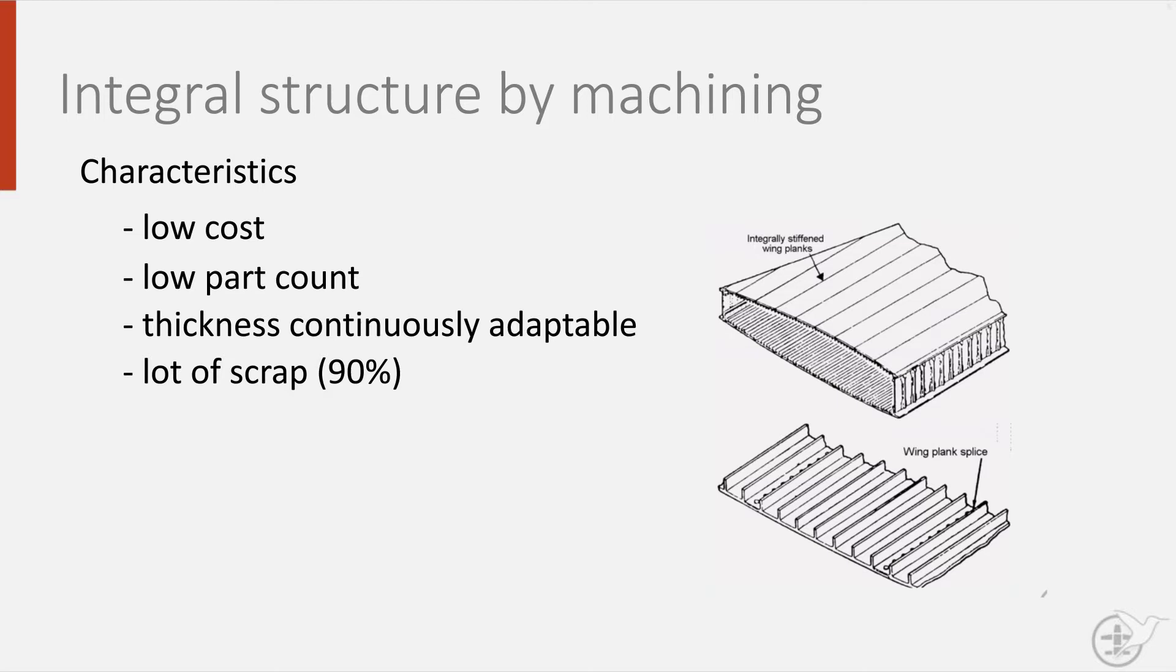The downside of integral machine structures is that the machining process limits the type of stiffeners to simple shapes only. Another major disadvantage is that once a crack has been initiated, it is free to grow continuously, whereas built-up parts contain natural barriers that stop or delay the crack. This is why an integral structure is considered less damage tolerant than a built-up structure.